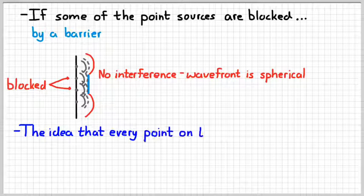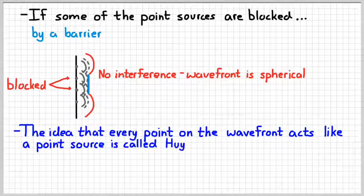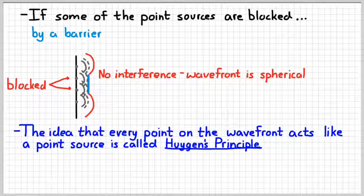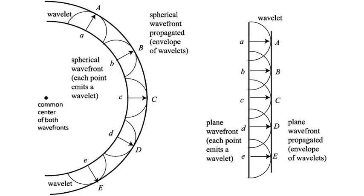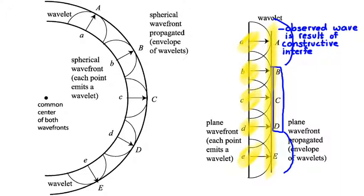This idea was first proposed by a man named Christian Huygens, and in his honor this principle is referred to as Huygens' principle: the idea that every point on a wave front acts like a point source. We're actually going to use this to think about a couple of other wave phenomena in the future. Here's a more professionally drawn picture — if we look at the picture on the left, each of these represents a point on the wave considered to be a point source, and the net effect of all those interfering is that you get a plane wave.